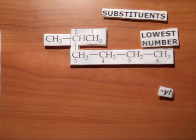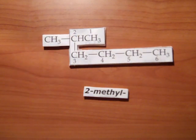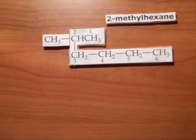In our example, we name the substituent 2-methyl. 2 for its location on the main chain, and methyl for the carbon substituent. The name, 2-methylhexane, is the result.